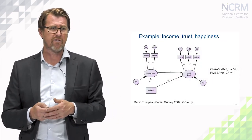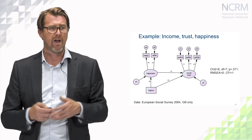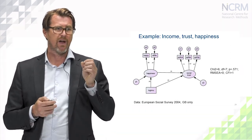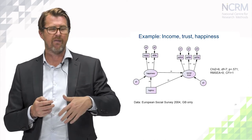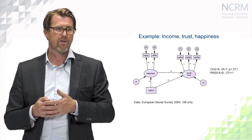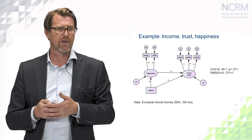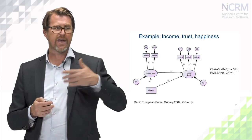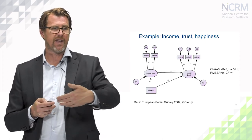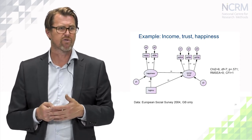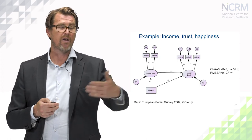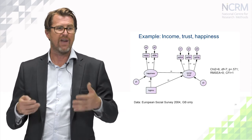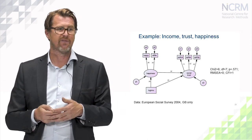Here's an example, again, using the European Social Survey, an actual model here where we are looking at the effect of being in a high income group, your income on your level of social trust, and breaking that down into the direct effect of income on social trust, and also the indirect effect through your level of happiness or life satisfaction.